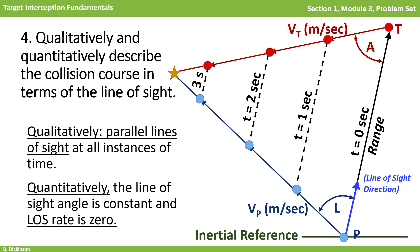The angle between the range vector and the inertial coordinate system is the line of sight angle, usually denoted by the variable lambda. Therefore, in terms of the line of sight angle, collision is ensured when lambda is constant, or lambda dot is equal to zero.